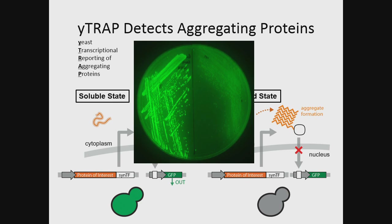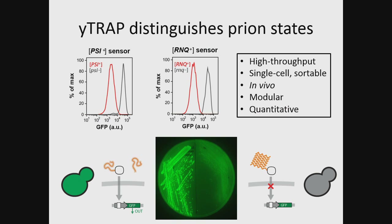For the most part so far, I've used this system to study these interesting phenomena we call yeast prions. Here I'm showing two yeast prions, the psi prion and the rink prion. The psi-plus state is indicative of the aggregated prion state, whereas the psi-minus state is indicative of the soluble state, and we can detect that difference. This is flow cytometry data measuring GFP — this is my favorite way to measure the Y-TRAP signal because you get such a good sense of the whole population.